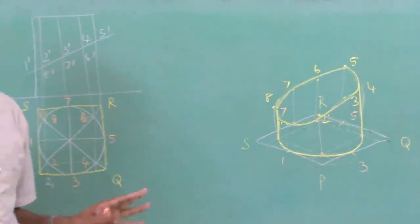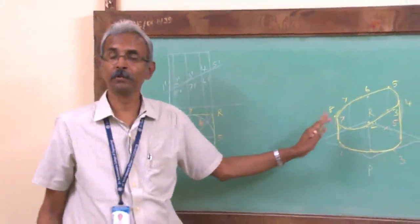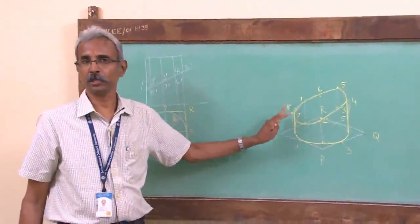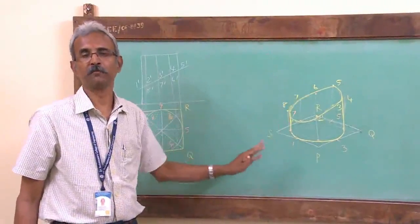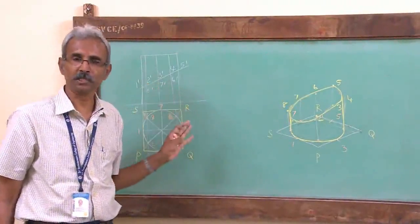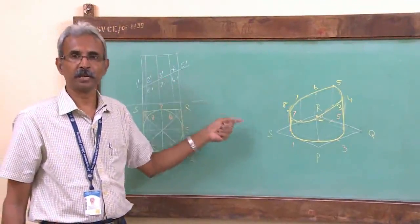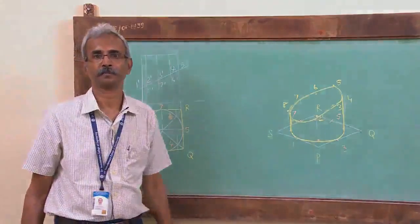To repeat the key rule: if the question asks for an isometric view, use the actual true lengths. If it asks for an isometric projection, use the isometric scale and draw accordingly.